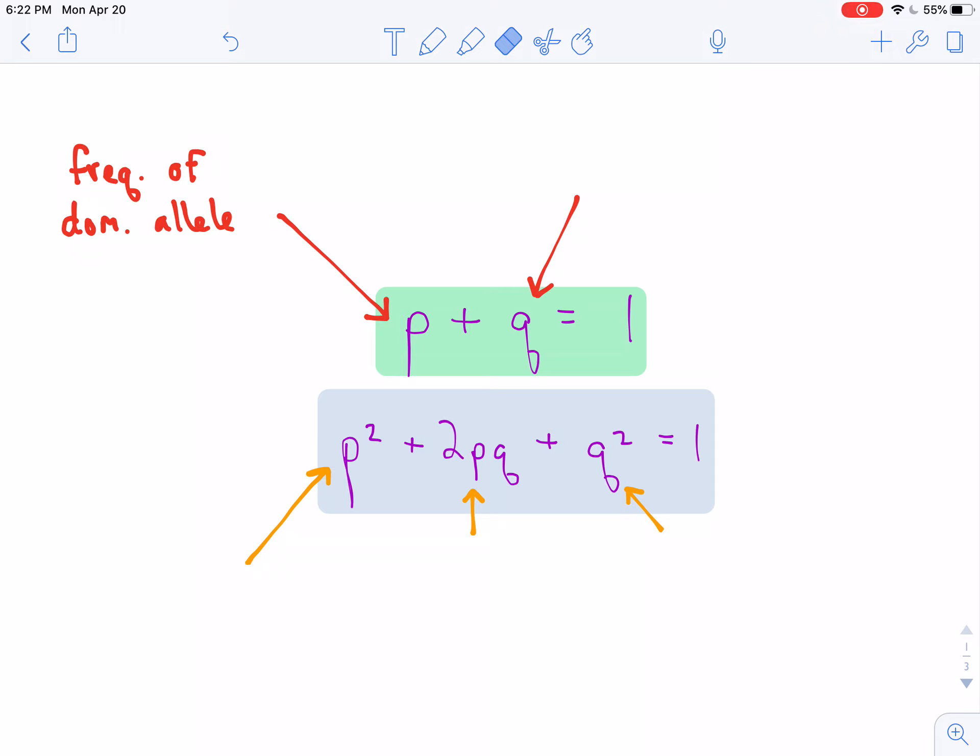Q, therefore, is the frequency of the recessive allele. So it makes sense since we know that a gene has two alleles, let's say the gene for human eye color, big B versus little B. A certain percentage of the gene pool is going to be made up of the dominant allele, big B, and a certain percent of the gene pool is going to be made up of the recessive allele, in this case little B.